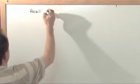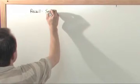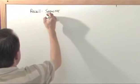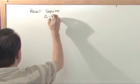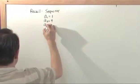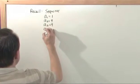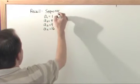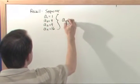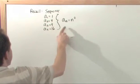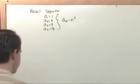Recall that a sequence is just a list of numbers like this. You would have a sub 1 equals 1, a sub 2 equals 4, a sub 3 equals 9, a sub 4 equals 16. This would be a sequence, and you would write down the general form of that sequence as a sub n equals n squared, because each value of n you put in for 1, 2, 3, and 4, you get back the square of it.